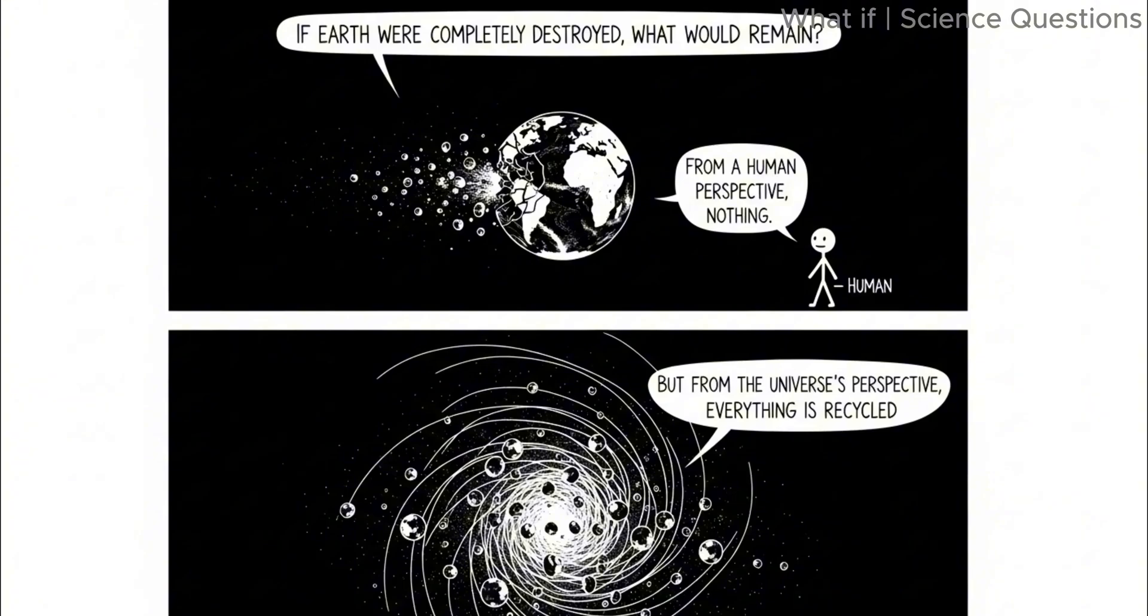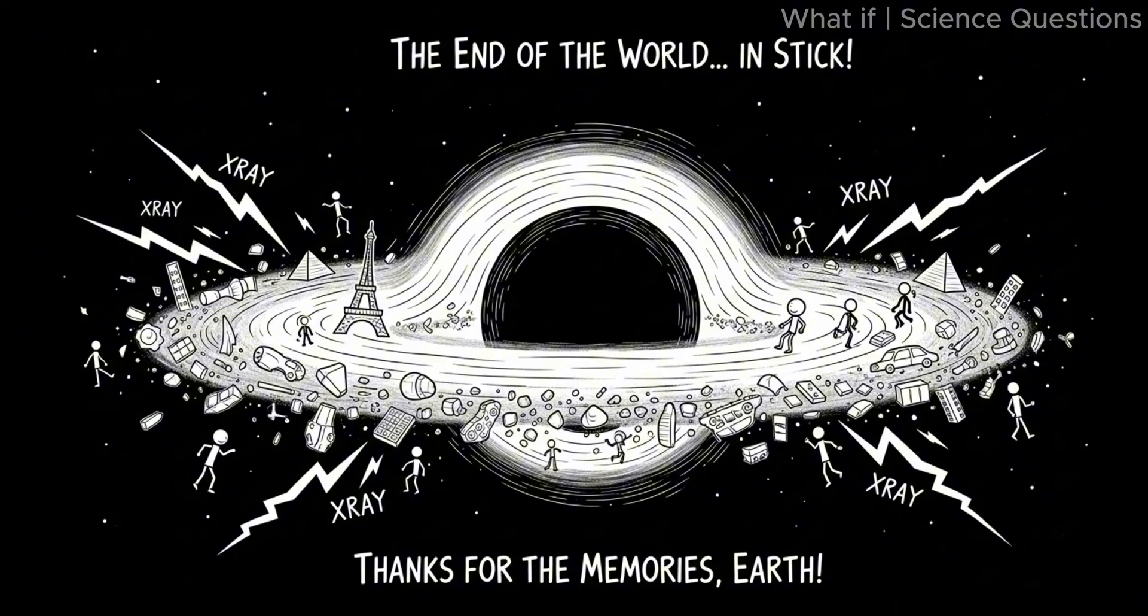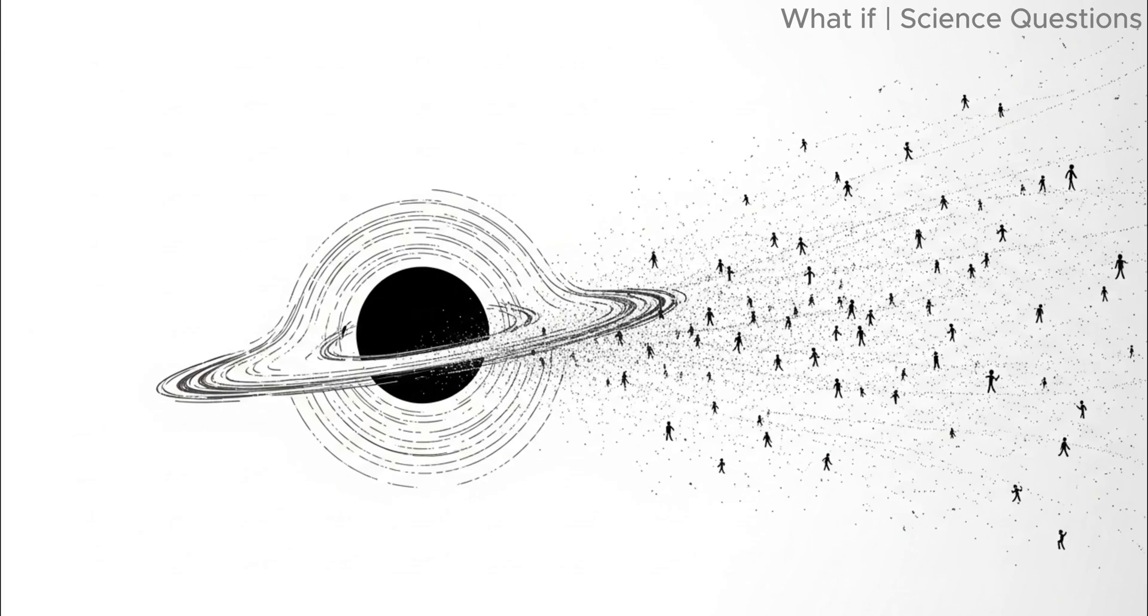If Earth were completely destroyed, what would remain? From a human perspective, nothing. But from the universe's perspective, everything is recycled. The debris from our planet would form a temporary accretion disk around the black hole, heating up to millions of degrees and releasing powerful x-rays. Eventually, all matter would spiral inward and vanish beyond the event horizon. The solar system as we know it would cease to exist. Only the black hole would remain, silently drifting onward through the galaxy, carrying the atoms that once formed Earth, its oceans, and its people.